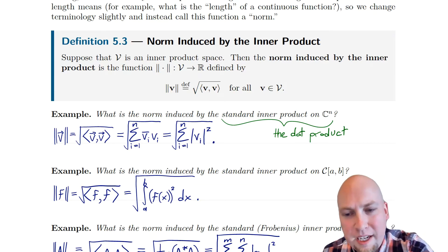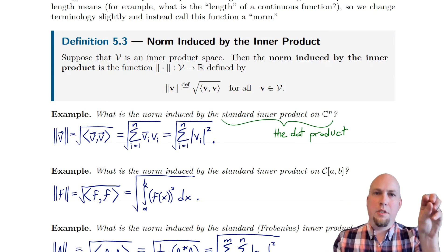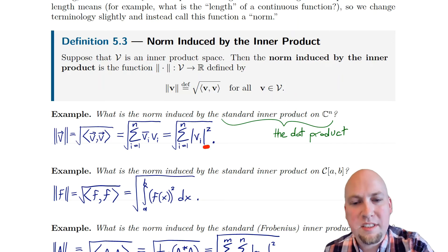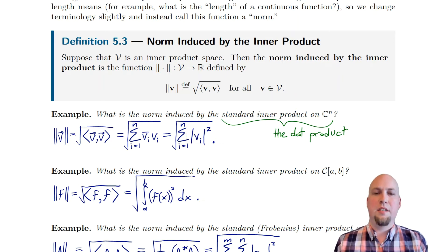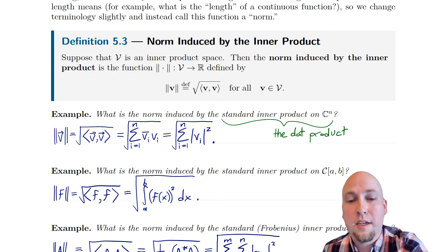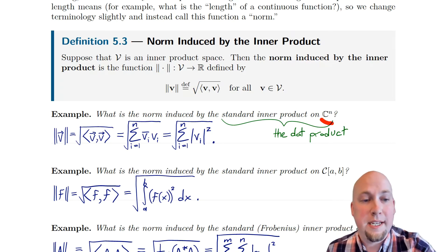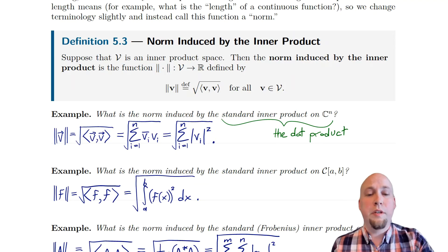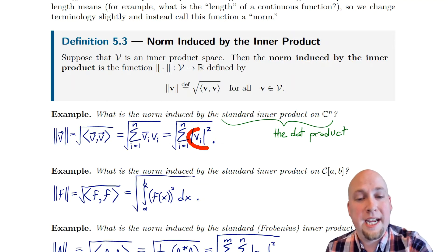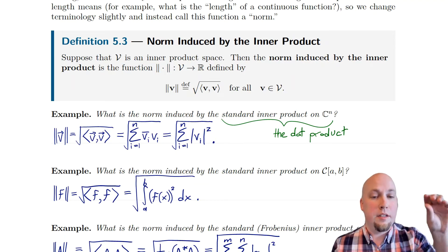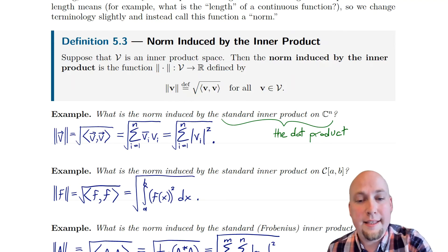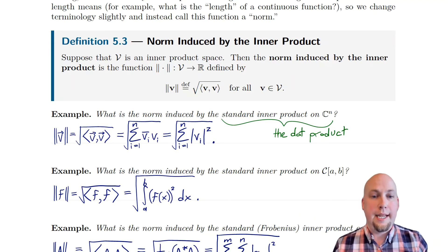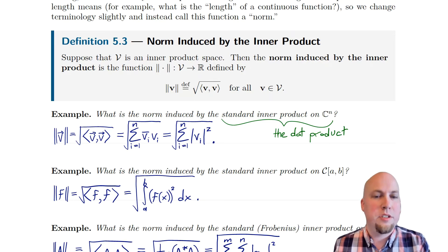v̄_i times v_i — whenever you have a number times its own complex conjugate, it equals the magnitude of that complex number squared. So the norm induced by the inner product on C^N is just the 2-norm — the usual Euclidean norm. You take the magnitude of each entry, square it, add those up, and square root at the end of the day, just like the usual vector length on R^N.